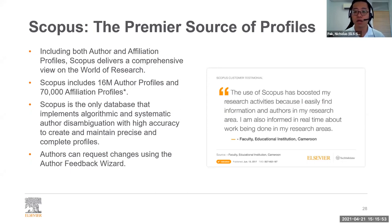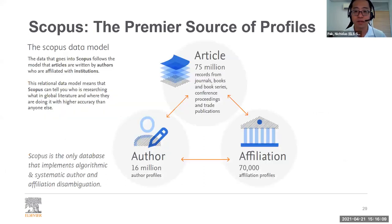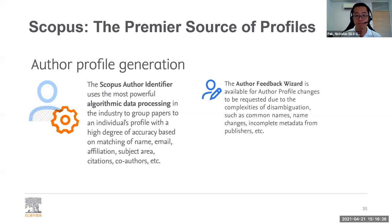Feedback from users shows that the use of Scopus has boosted their research activities because they can find information and authors in their research area, and they're kept up to date about what's being done in research areas. Using a data processing method, we group papers to an individual's profile with high accuracy based on the name, email, affiliation, subject areas, citations, and co-authors.